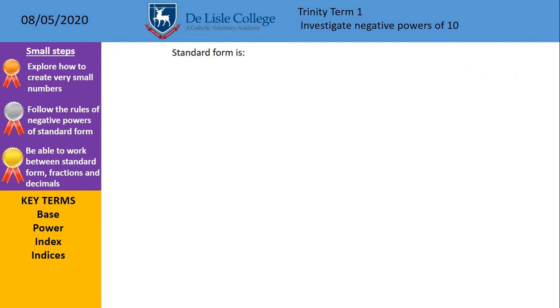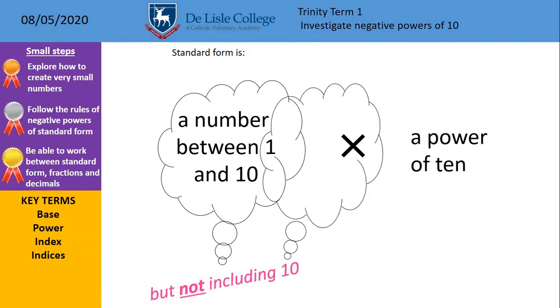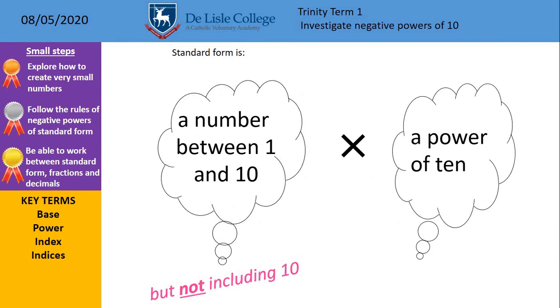So just a quick reminder on standard form. Standard form is a number between 1 and 10, but remember we cannot include 10, it must be 1 or larger but less than 10, multiplied by a power of 10. And what we're going to say now, previously we looked at positive powers of 10, so like 2.2 times 10 to the power of 6. That created large numbers. We're going to look at now negative powers, which go the opposite way and create a small number, so perhaps like the size of an atom.